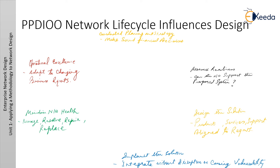Let us discuss design as an integral part of PPDIOO methodology, also called P-squared-DIOS-squared, the network life cycle methodology. It reflects the phases of a standard network's life cycle. The first phase is the Prepare phase. The Prepare phase involves establishing the organizational or business requirements, developing a network strategy, and proposing a high-level conceptual architecture, identifying technologies that can best support the architecture. Financial justification for the network strategy is established by assessing the business case for the proposed architecture.